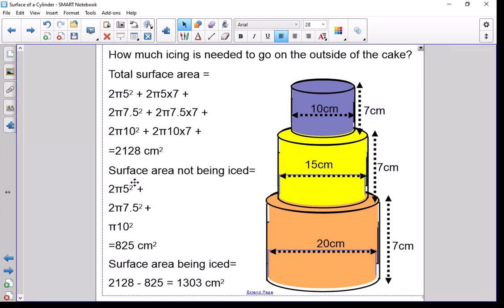Surface area not being iced. So now we're going to consider the bits that we can't see. So if we look at the top tier, we know the area of one of those circles is 2 times 5 squared. Well, we'd need to take away one from the top tier and the bit that's being covered on the tier in the middle. So it'd be two lots of π5². The same happens between the middle tier and the bottom tier, so we'd have two lots of π times 7.5 squared that needs to be subtracted in a moment. And for the very bottom, which also doesn't need to be iced, that would be 10 lots of 10 squared times pi.